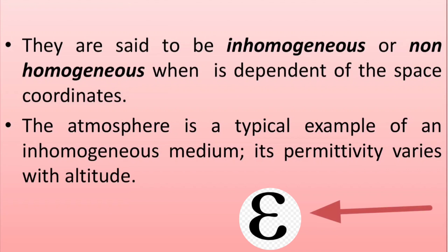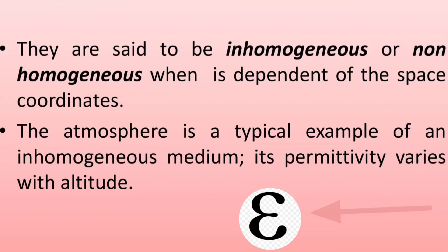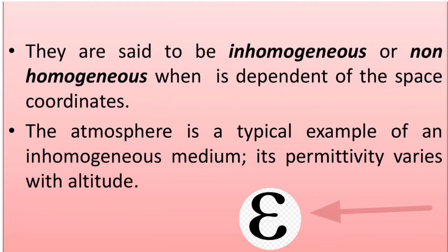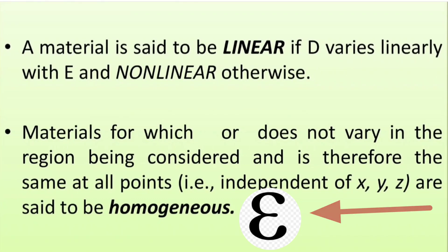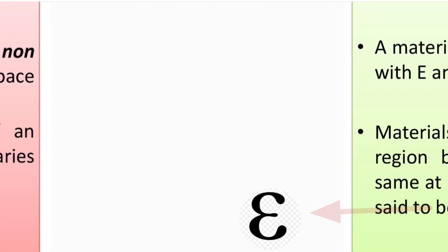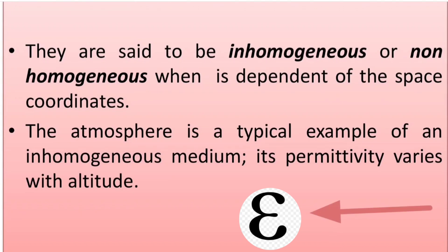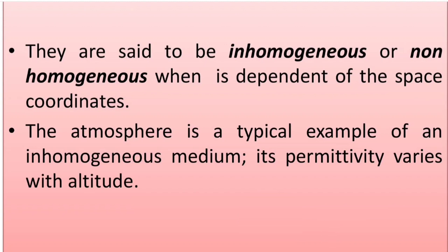Materials are said to be inhomogeneous or non-homogeneous when epsilon is dependent on space coordinates x, y, z. In contrast, for homogeneous materials epsilon is independent of coordinates. The atmosphere is a typical example of an inhomogeneous medium — its permittivity varies with altitude.